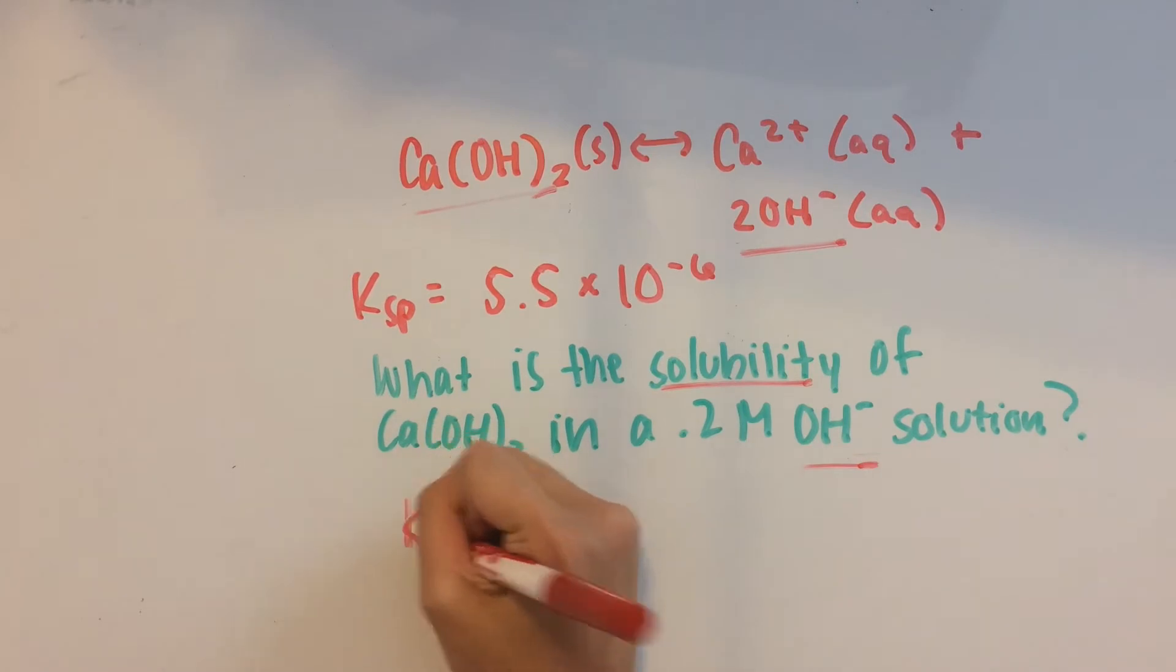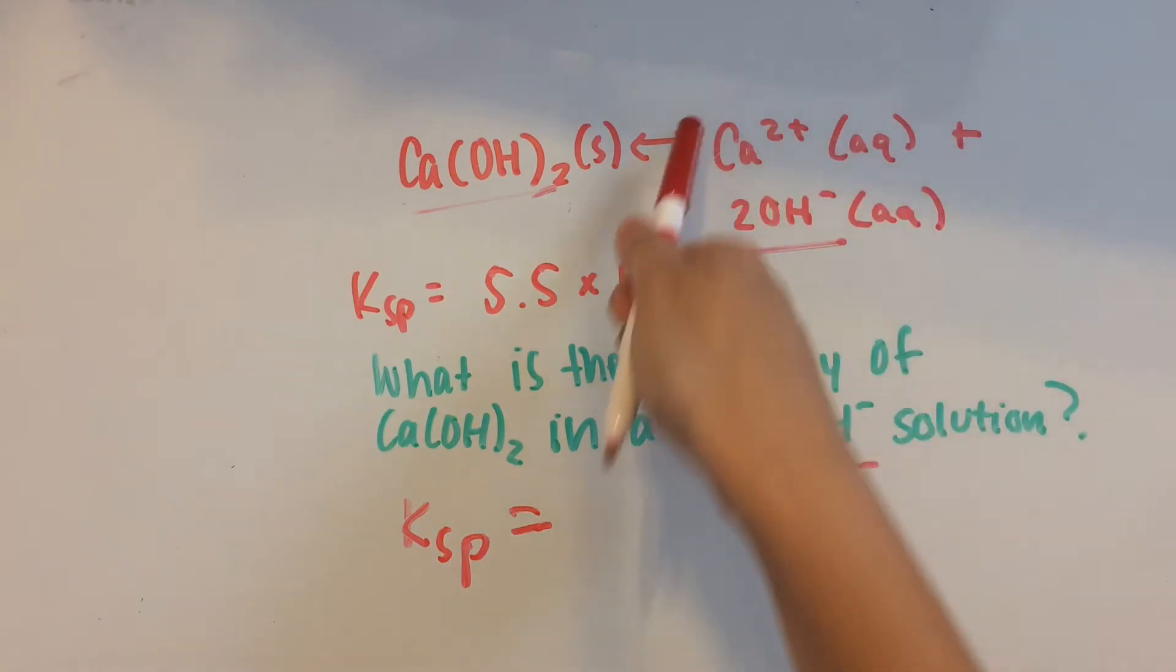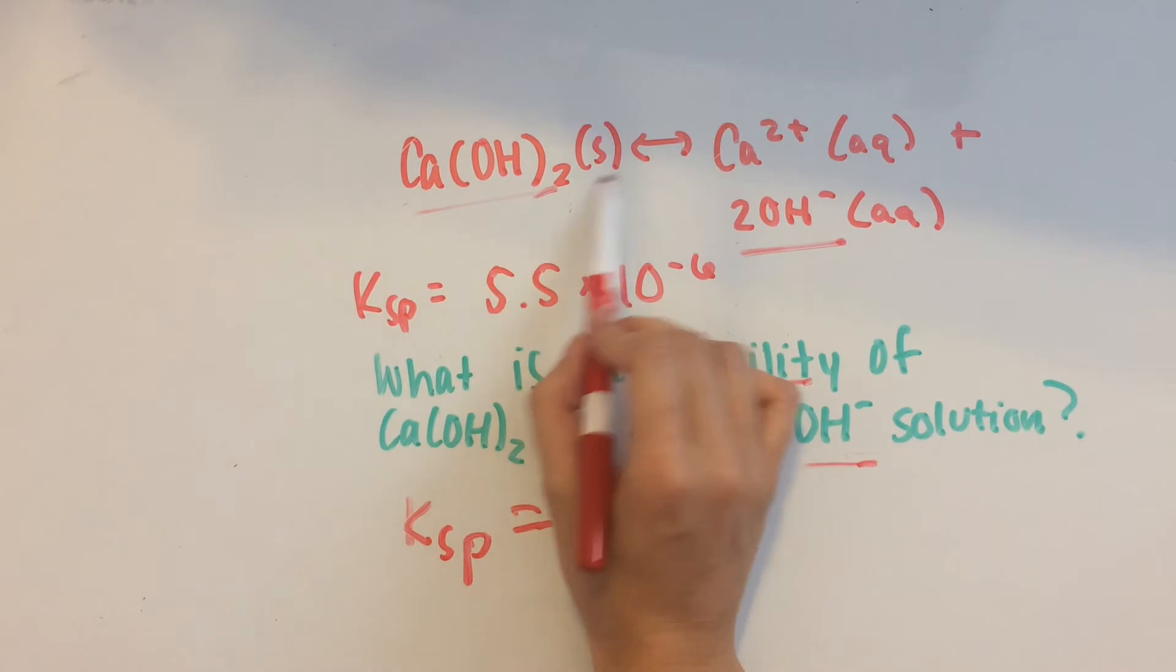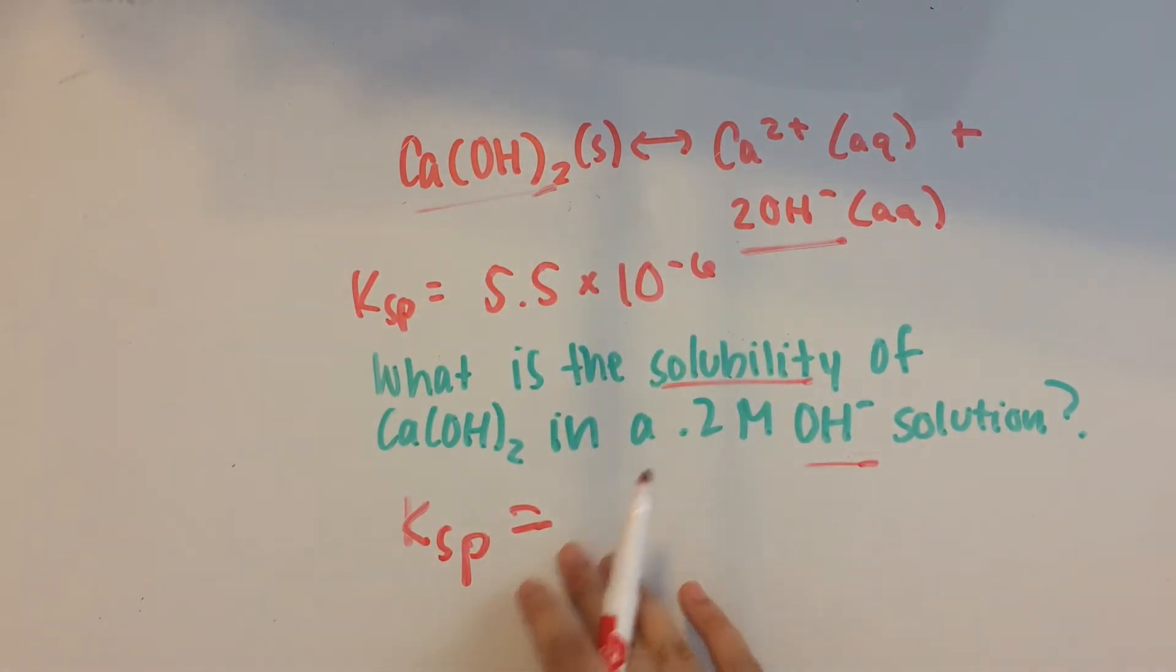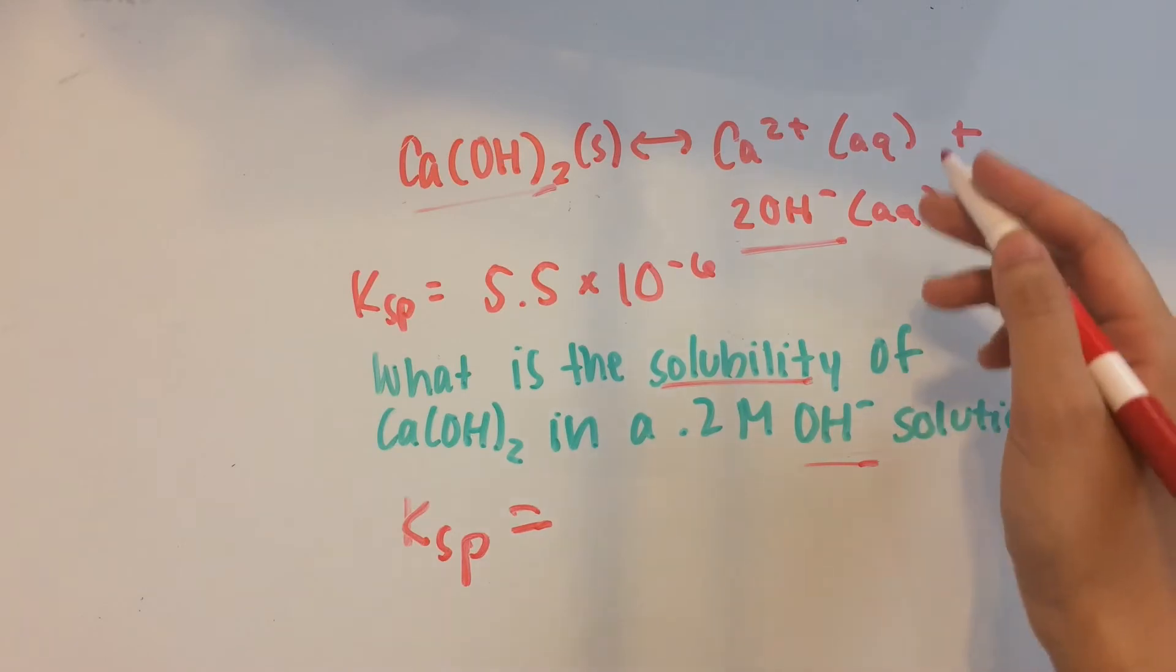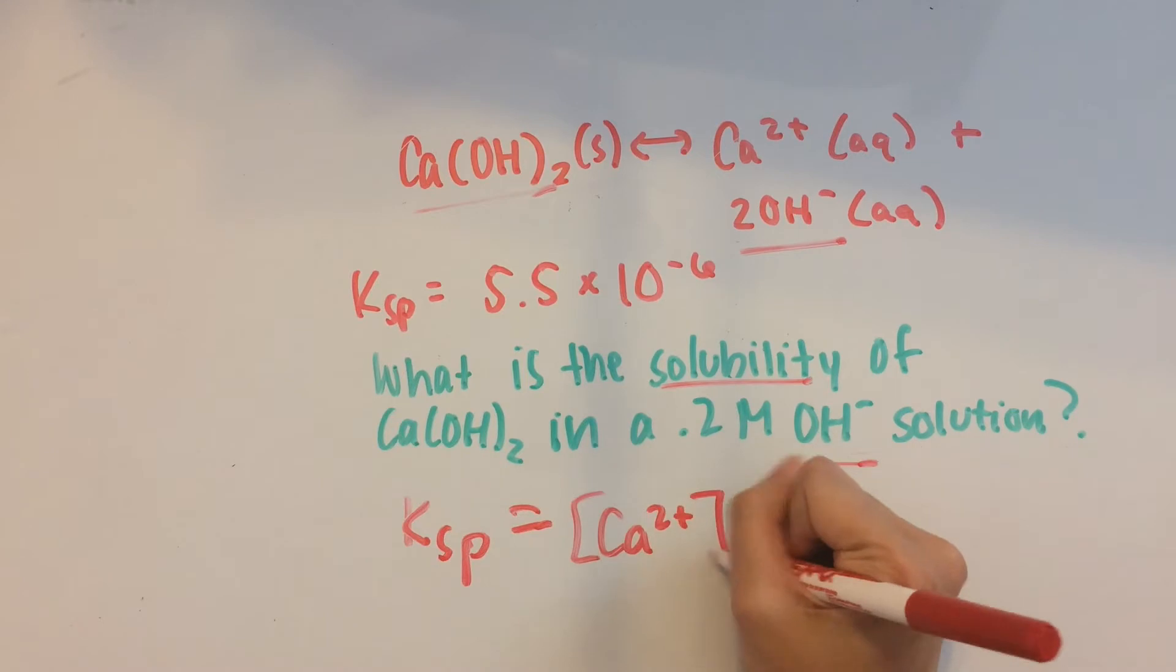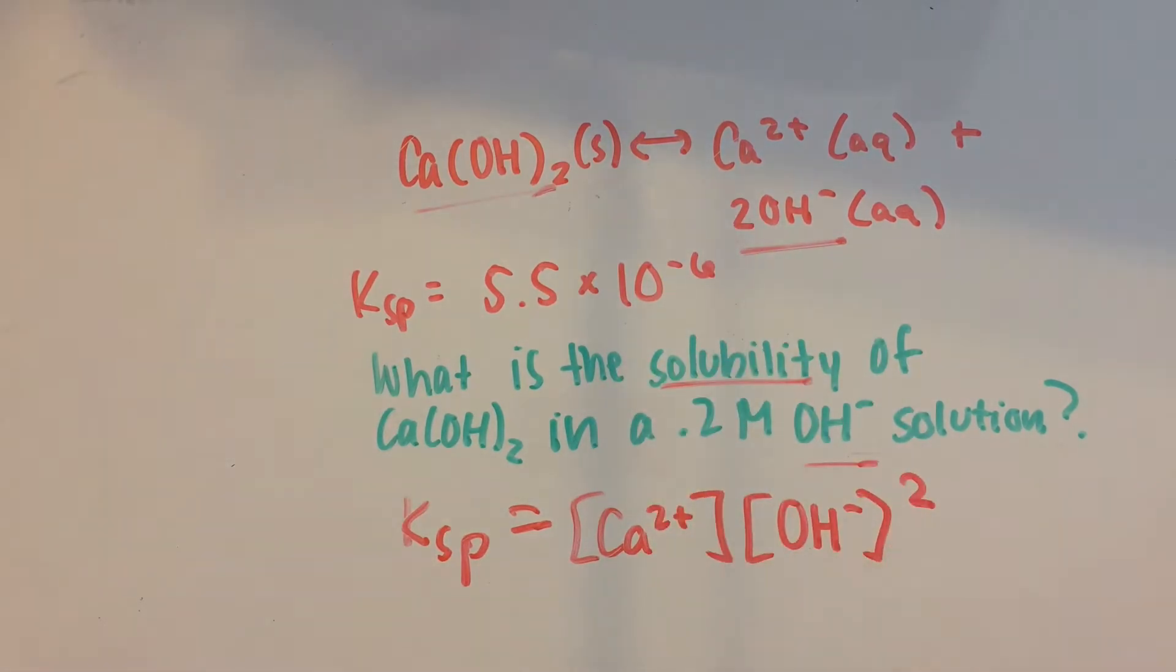Since Ca(OH)₂ is a solid, we don't include it in the expression. But since Ca²⁺ and OH⁻ are ions, you can find the concentration of them. So we write concentration of Ca²⁺ times concentration of OH⁻ squared. Don't forget that coefficient.